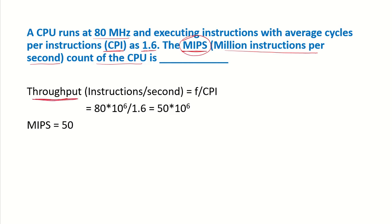In that we had discussed that the throughput, which is the instructions per second, can be given by F, which is the clock rate, upon CPI, which is the clock cycles per instruction. So the throughput is 80 into 10 to the power of 6, which is our F, and CPI is given to us as 1.6. So if we divide this, we get 50 into 10 to the power of 6. Now what is asked in the question is MIPS or million instructions per second. So we have to divide this throughput by 10 to the power of 6, which is a million. So dividing this by 10 to the power of 6, we get a value of 50. So the MIPS for this system is 50.